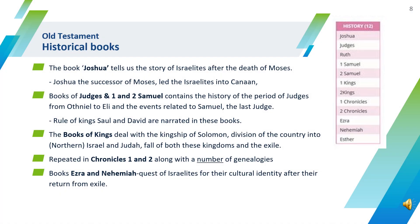The next category of Old Testament books are the historical books. The book of Joshua tells us the story of Israelites after the death of Moses and their entry into Canaan. Books of Judges and Samuel 1 and 2 contain the history of the period of Judges from Othniel to Eli, and events related to Samuel, the last judge, and about the rule of King Saul and David. The books of Kings deal with the kingship of Solomon, division of the country into northern Israel and Judah, about the fall of both kingdoms and the exile, which is repeated in Chronicles 1 and 2 along with a number of genealogies. Ezra and Nehemiah talk about the quest of Israelites for their cultural identity after their return from exile.